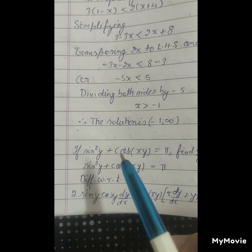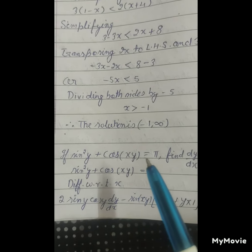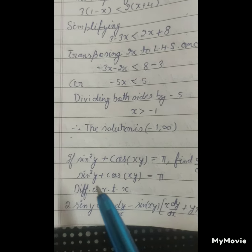If sine square y plus cos xy equals to pi, find dy upon dx.